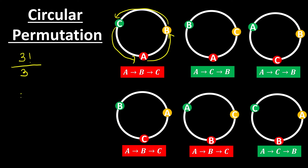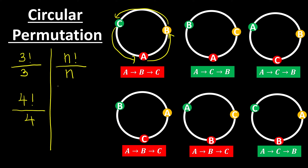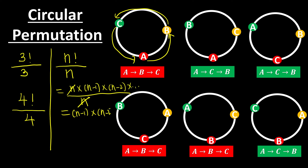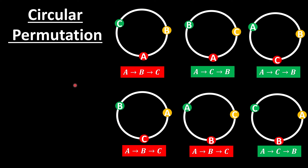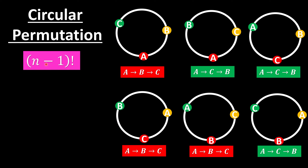So for circular permutations, we take the usual n factorial result and divide by n identical copies, because the people can rotate through n positions. It means that for four people in four seats, we divide by four — they have the same arrangement after each rotation. As a general conclusion, for n people in a circular arrangement, we divide n factorial by n. Since n factorial equals n × (n−1) × (n−2) × …, dividing by n leaves us with (n−1) factorial.